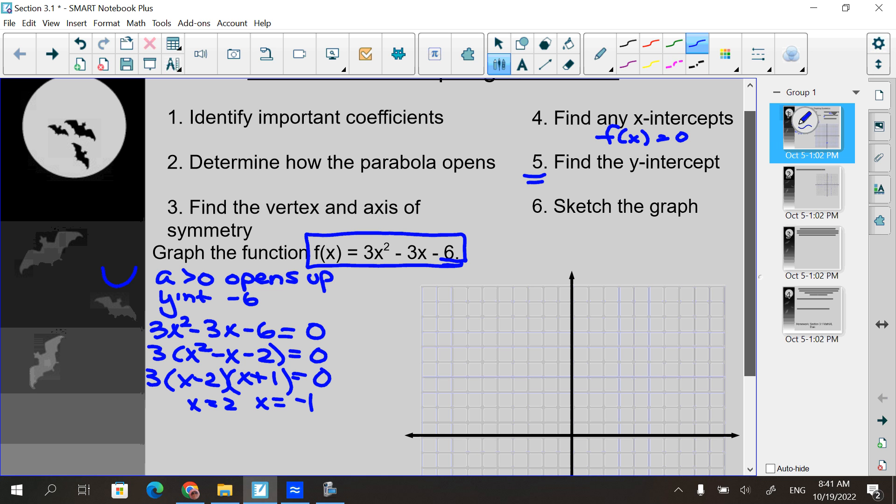So plot them. Here's two, here's negative one. So it's like you're gathering information as you're going through and you're graphing these.